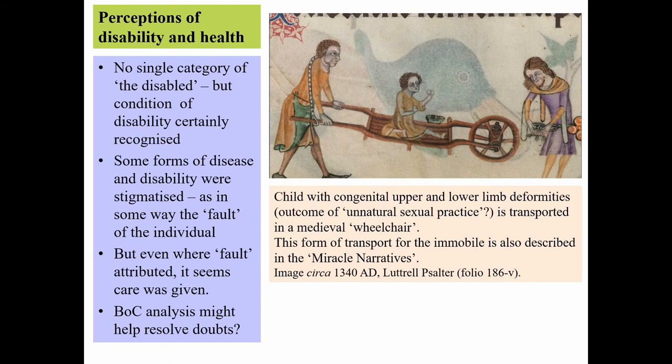Texts can shed light on how people with disabilities were perceived. While there may have been no specific category of 'the disabled' in medieval times, disabilities existed and were sometimes stigmatized. In some periods, people with leprosy were considered unclean; those born with deformities were seen as products of unnatural sexual practice at conception; those crippled or blinded in later life were seen as displaying punishment for sins against God. Until quite recently it was believed that where disability was considered the fault of the sufferer, they received little sympathy — although most historians now believe that even where notions of fault pertained, those in need did receive care.